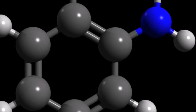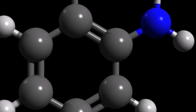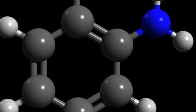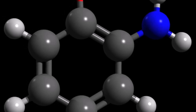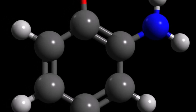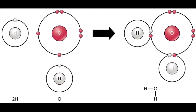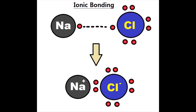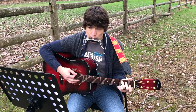You bond them together and what do you got? A compound is made right there on the spot. Some are covalent and others ionic. Pull them together along with metallic.